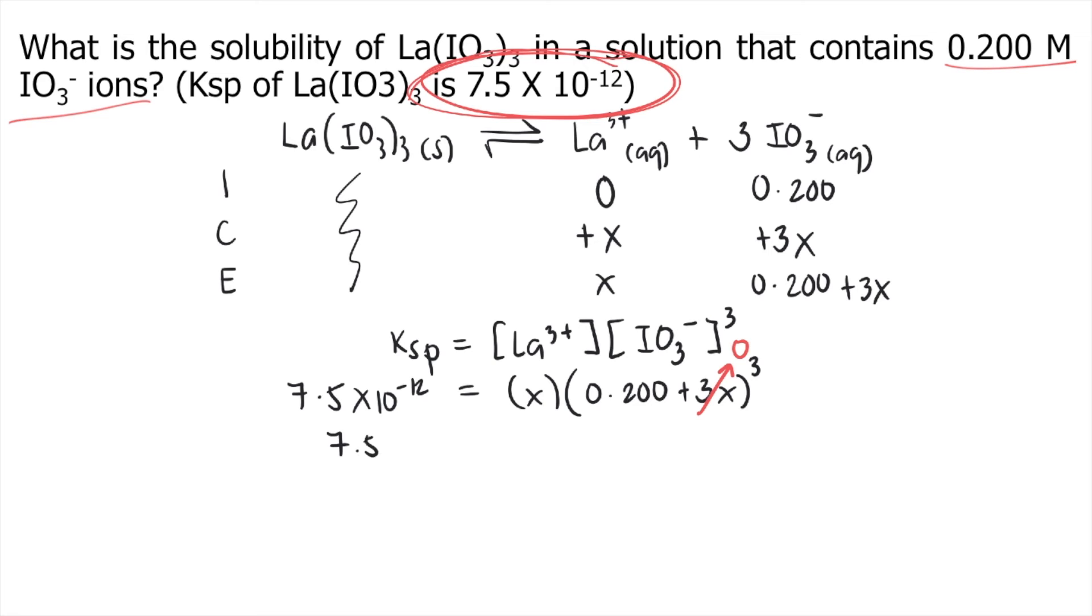If we do that, our equation becomes 7.5 times 10 to the negative 12 equals X times 0.200 raised to 3. To solve for X, we need to divide both sides by 0.200 raised to 3.